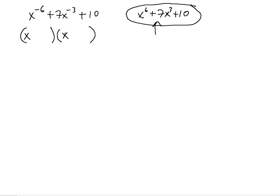You would have the x's as your first terms in each parenthesis. The two x's must have the same power, because you want your middle term to contain x to the negative third power. When you multiply the bases you sum up their exponents, so negative 3 plus negative 3 gives you negative 6 — you kill two birds with one stone.